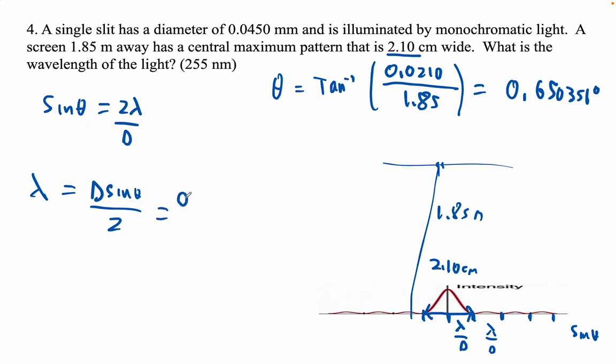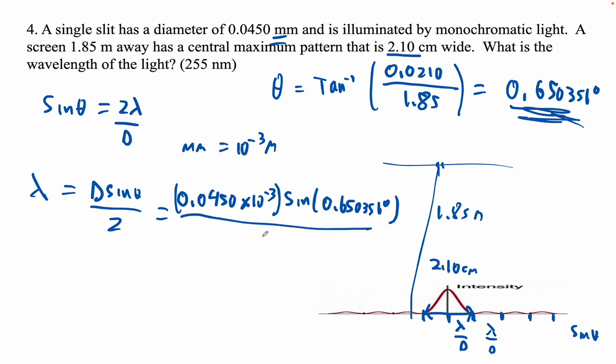Okay, so what are we? Oh, we're looking for the wavelength of light. So the wavelength of light is going to be D, big D, the width of the slit, sine theta divided by 2. So that is 0.0450. Now notice that's millimeters. So times 10 to the minus third because a millimeter is 10 to the minus third meters. And they're going to throw those at you willy-nilly. And then I'm going to go sine of 0.650356 degrees, approximate. I'm just going to use this number on my calculator. And then I'm going to divide that by 2.